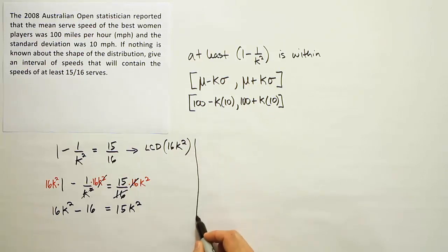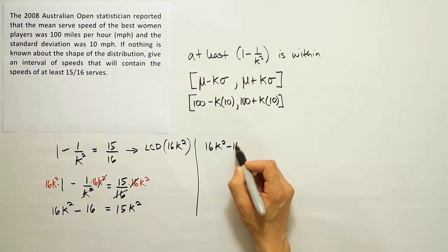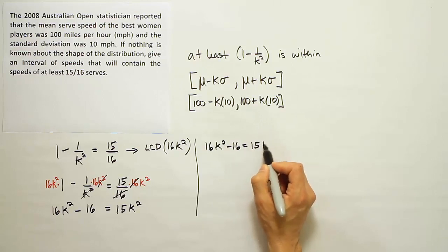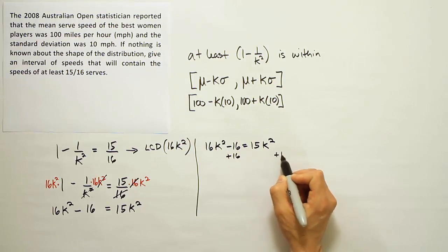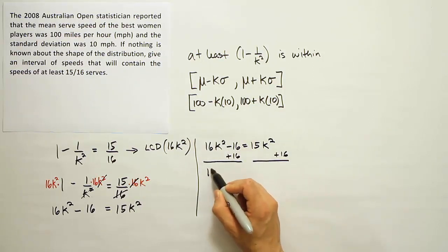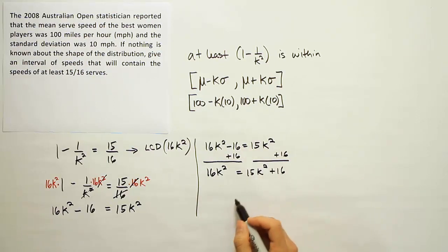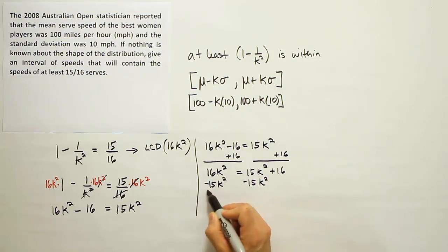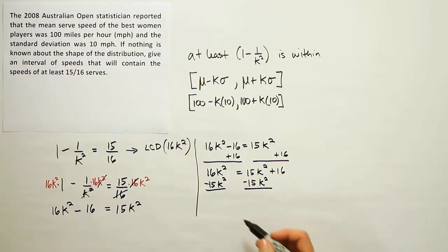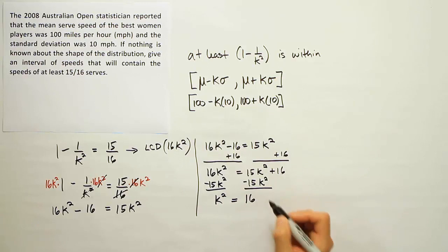Let's carry the work over to the other side and continue working on it. So 16k squared minus 16 is equal to 15k squared is where we left off. If I add 16 to both sides, you will see that I get 16k squared is equal to 15k squared plus 16. Now, I will subtract 15k squared from both sides. And lastly, you will see at that moment that 16k squared minus 15k squared, that's just 1k squared or k squared, and that is equal to this number 16 on the other side.